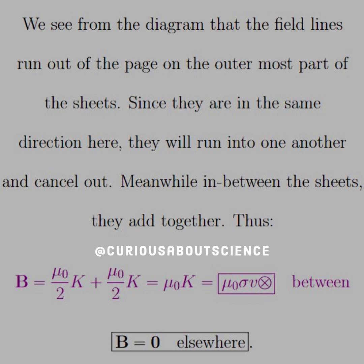But in the middle, they run and join together, and we know that blue and red on the diagram come together to make purple, and that's because they add together in the middle. So we see that the B field is mu naught over 2K plus mu naught over 2K,